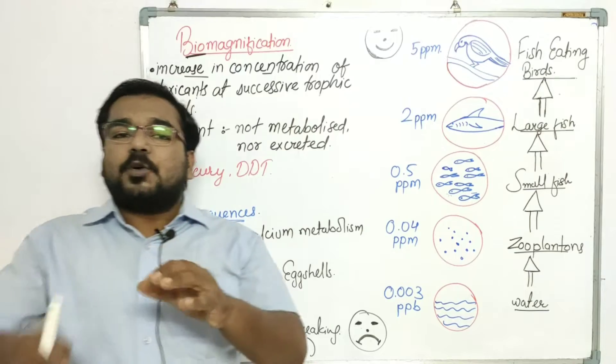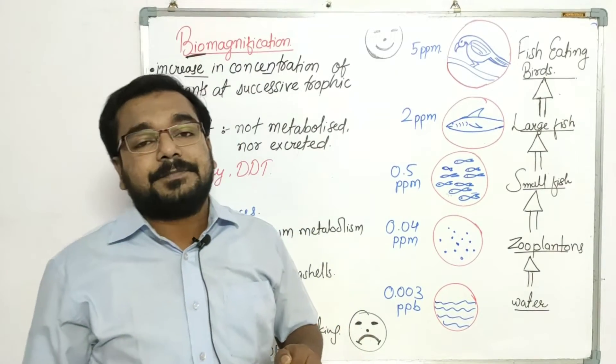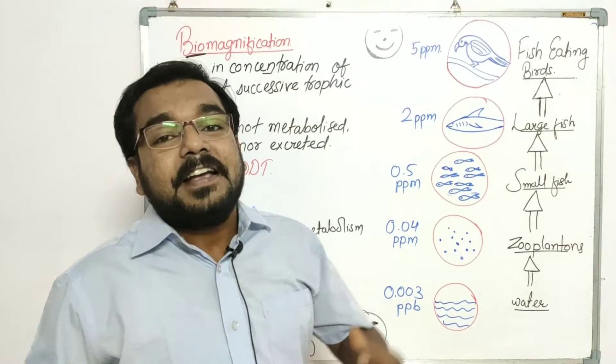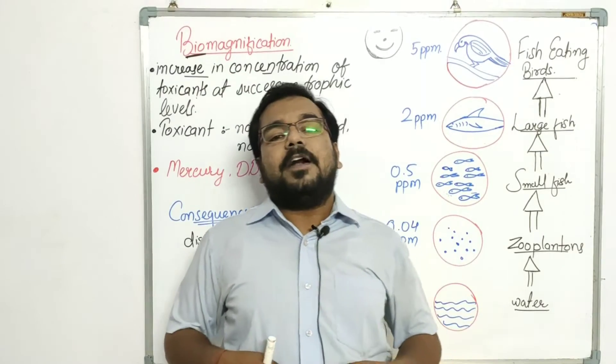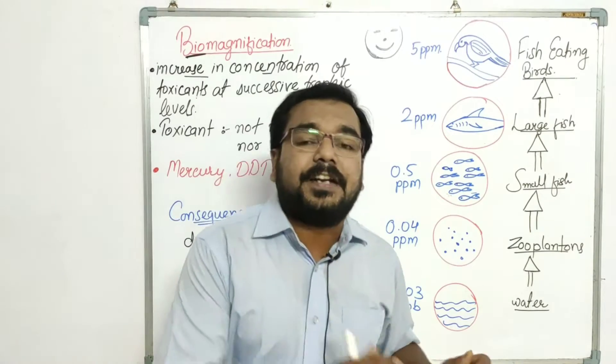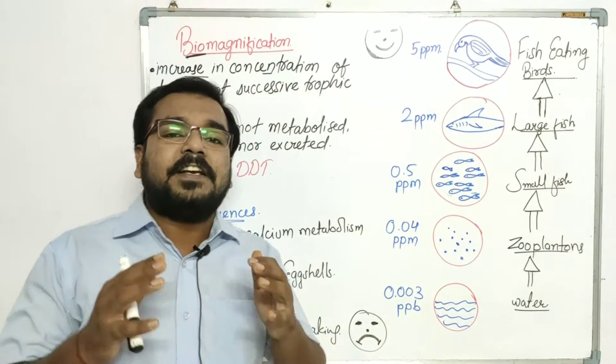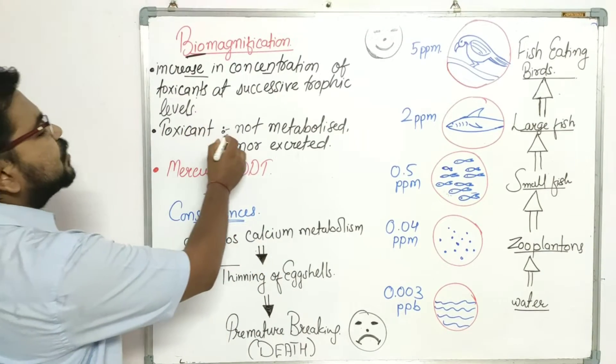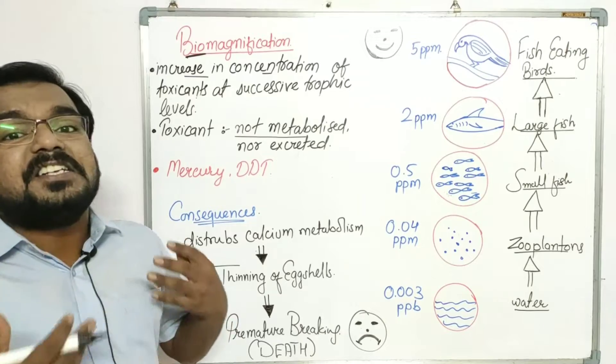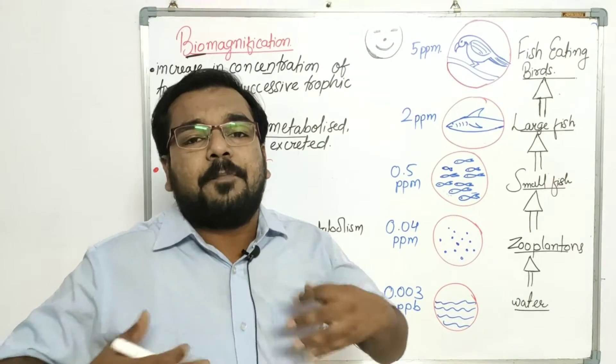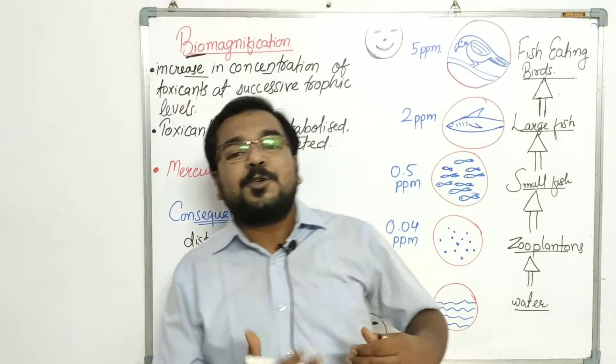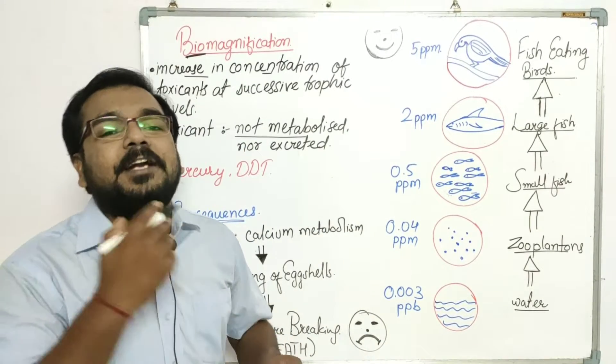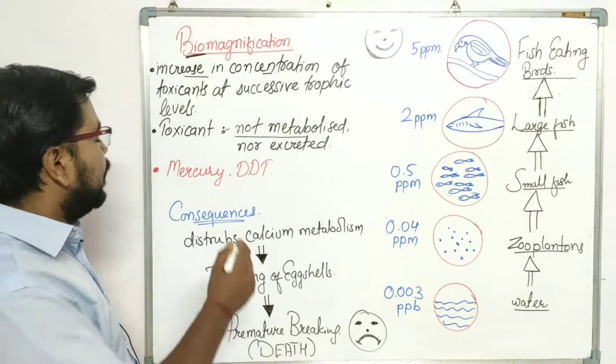Now in the biomagnification, the substance is accumulating. Because of that, generally students, it is like that whatever gets into our body is either metabolized or excreted. But in case of this biomagnification, what do we find? We find that the substance is not metabolized nor excreted. It means that you can either use it in the body or remove it from the body. But slowly, slowly, what do we find in the body? It accumulates.